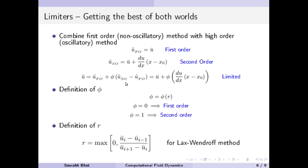If phi is equal to 1, the terms cancel and we are left with a second order reconstruction. Simplifying by substituting these equations, we end up with a final equation: the average value at that cell, plus the limiter parameter phi multiplied by the derivative and the distance between the centroid and the x at which we are calculating the value. This is the final function we will be using in our code.